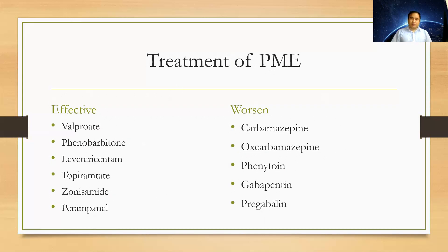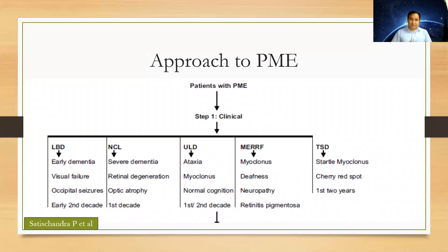Regarding treatment, we need to counsel the patient and family regarding the course of the disease, comorbidities, and safety issues. The effective treatments for PME are valproate, phenobarbitone, levetiracetam, topiramate, zonisamide, and perampanel. Oxcarbazepine, carbamazepine, gabapentin, and pregabalin should not be given as they can worsen progressive myoclonic epilepsy.